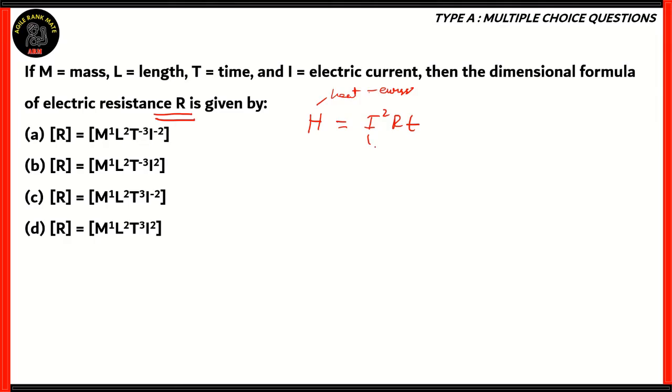I squared, I represents the electric current. R represents the resistance, and T represents time. So, the formula for resistance will be H over I squared T.